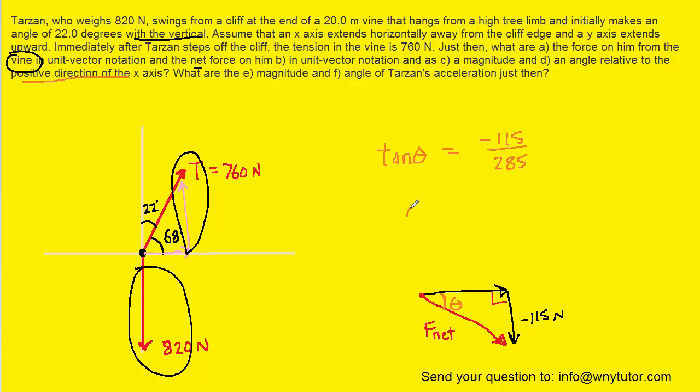And to find the angle we just take the inverse tangent of this ratio. And when we do that we get approximately negative 22 degrees.